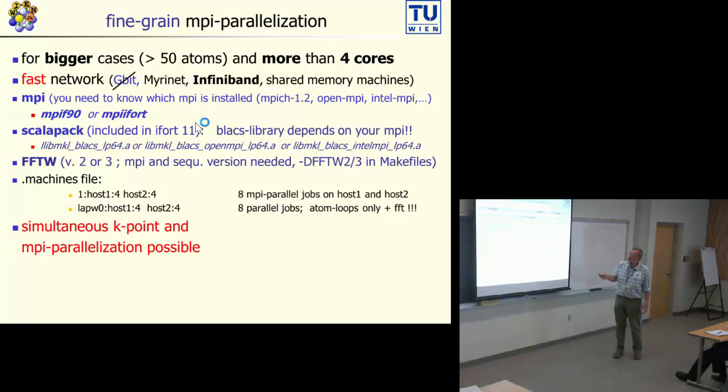For those cases, when you have a fast network like InfiniBand or a bigger shared memory machine, as we have here with 32-core machines, then you would need to install MPI. Various MPIs are available. I usually use the Intel MPI because our university has a campus license, so don't ask me about the performance of these other MPIs. You need ScaLapack, and ScaLapack is included in the MKL, in the iFort compiler.